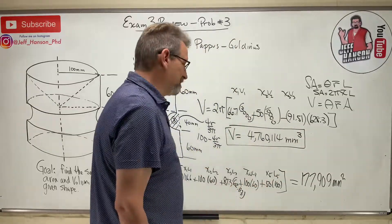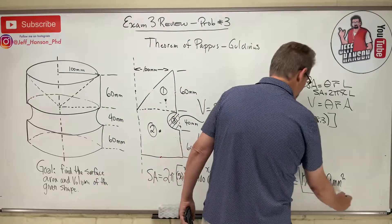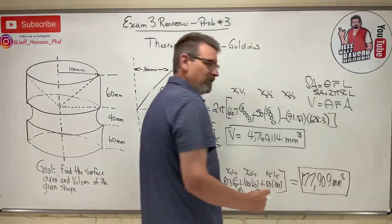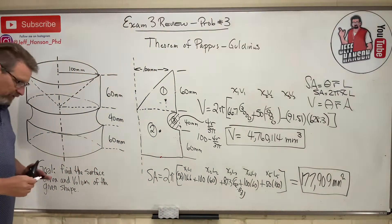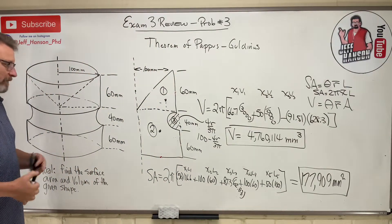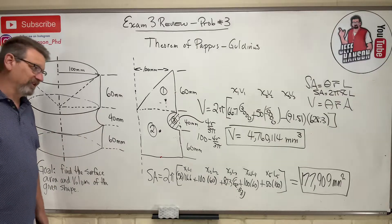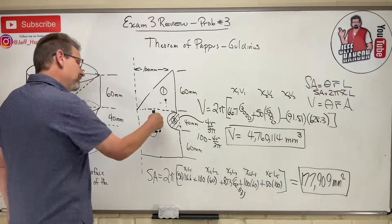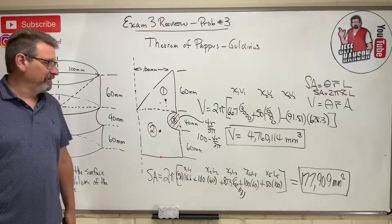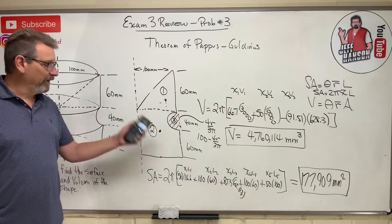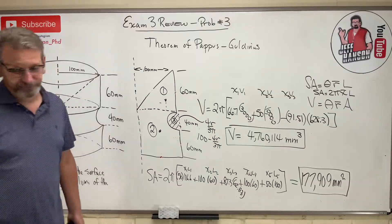4.76 million cubic millimeters — that's a lot, but cubic millimeters are really small. The most important part of Pappus-Guldinus problems, without a doubt, is being able to draw the generating shape. If there's one lesson here, that's it. See you in the next video.